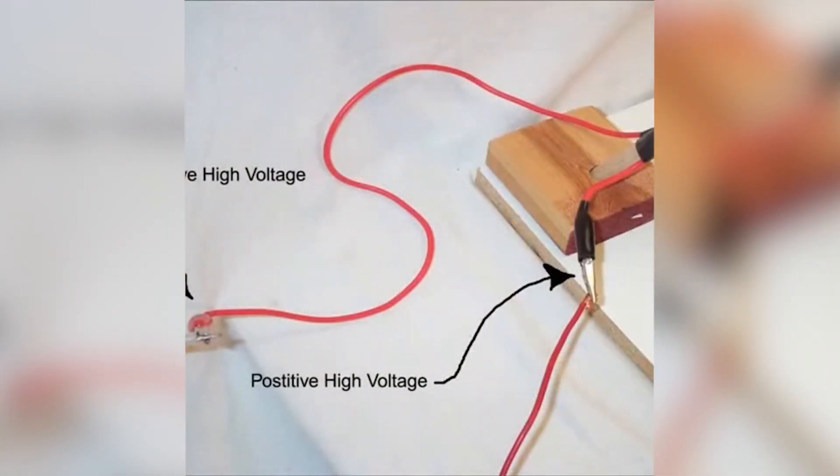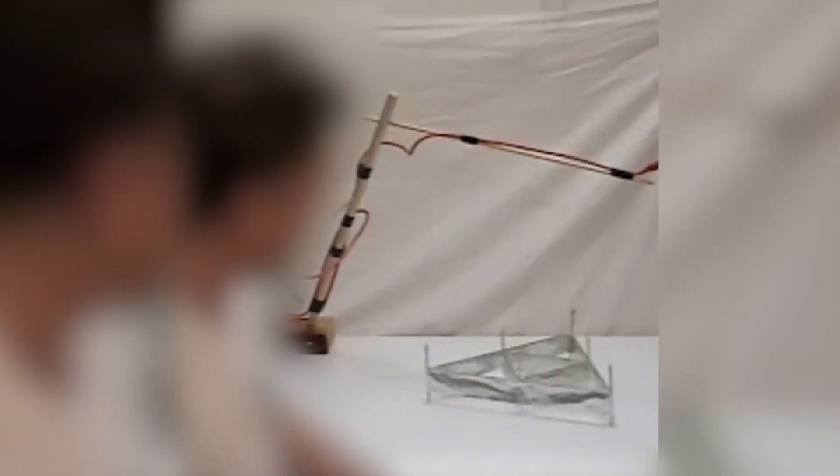Therefore, the following experiment can be presented. According to the video, it is clearly evident that if the electric current reaches a specific value, a magnetic field could be created that causes the object to lift off the ground.